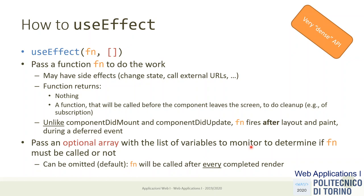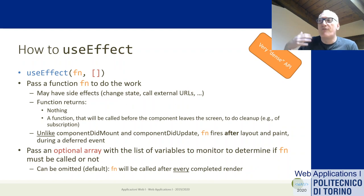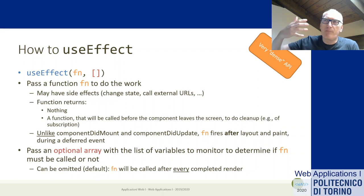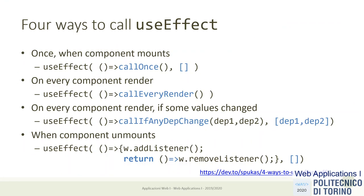Only if one or more of the variables listed in the array change will the function be called. If you're re-rendering the component but those variables haven't changed, the effect hook is not called — it's a way of avoiding calling the function when the component re-renders but nothing relevant has changed.